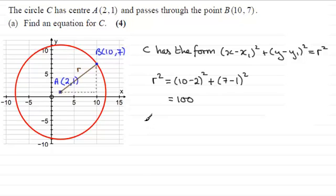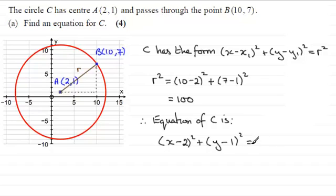So when it comes to the equation of the circle, therefore the equation of C is (x - 2)² + (y - 1)² = r². And r squared, we've just seen, is 100.